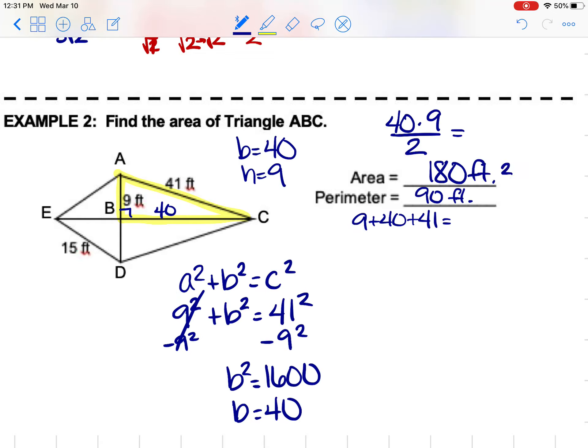So just make sure and locate your right angle. That gives you your base in height, and then you multiply them and divide by 2. But again, you may have to use some of your right triangle rules to help you find the base in height. So just pay attention with what's given in the problem.